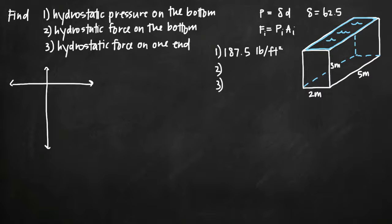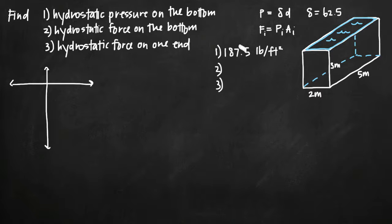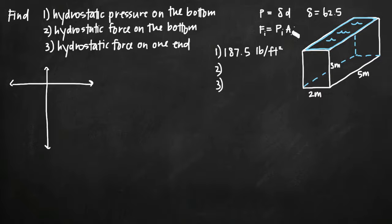Today we're going to be talking about how to find the hydrostatic force on the bottom of a tank and the hydrostatic force on one end of the tank. In a previous video I talked about how to find the hydrostatic pressure on the bottom of the tank. We assumed the density of water was 62.5, and multiplied that by a depth of 3 meters to get 187.5 pounds per square foot. When talking about water specifically, we can assume a density of 62.5, and we're going to need that to find hydrostatic force.